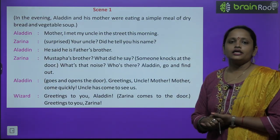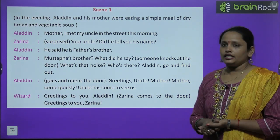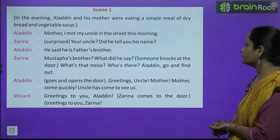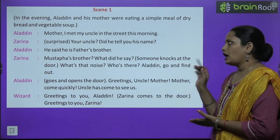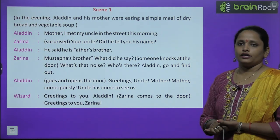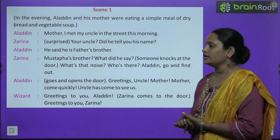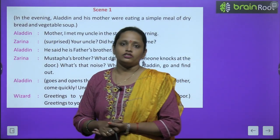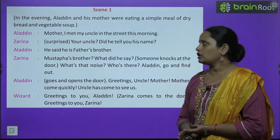Scene one: In the evening, Aladdin and his mother were eating a simple meal of dry bread and vegetable soup. Ab evening ka time tha, shaam ho rahi thi, aur Aladdin apni mummy ke saath khaana kha rahe the jisme dry bread tha aur kuch vegetable soup tha. Aladdin ne kya bola?